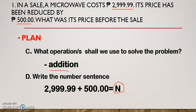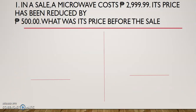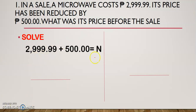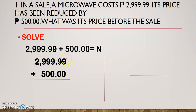After planning, you have to carry out your plan — you have to solve, you have to execute. To solve, write first the number sentence. Since the numbers involve decimals, in solving addition and subtraction of decimals, you have to arrange the numbers vertically. So this is now 2,999.99 and then 500. The important thing to remember in arranging numbers with decimals is that the decimal point should be perfectly aligned.